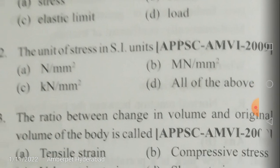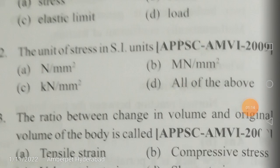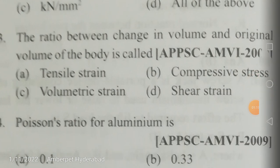The unit of force in SI units is Newton. Newton per mm² is Mega Pascal. Mega Newton per mm² equals Mega × Mega, that is 10 to the power of 12, which is Tera Pascal. Kilo Newton per mm² — kilo is 10³ and Newton per mm² is Mega Pascal, so 10³ × 10⁶ = 10⁹, that is Giga Pascal. All of these are units of stress in the SI system.